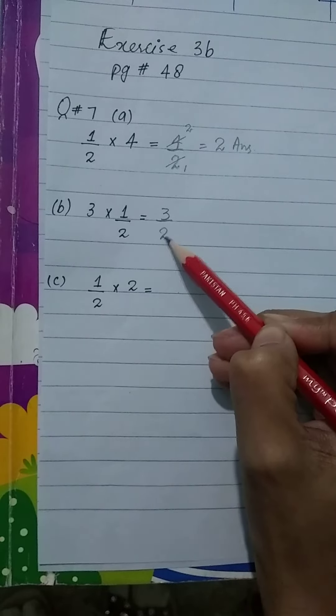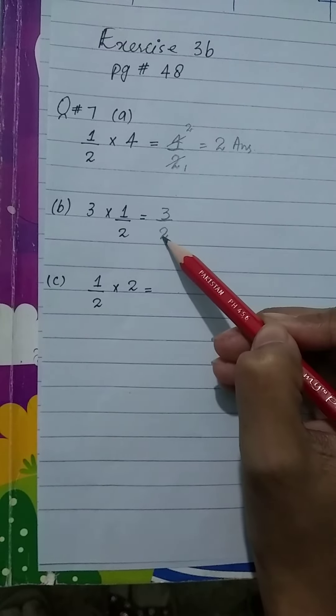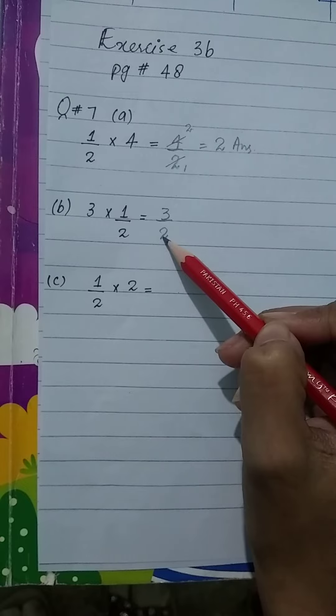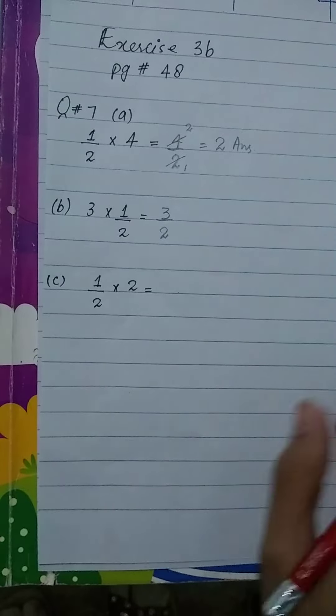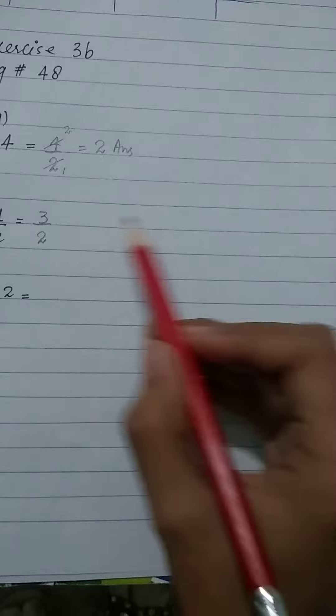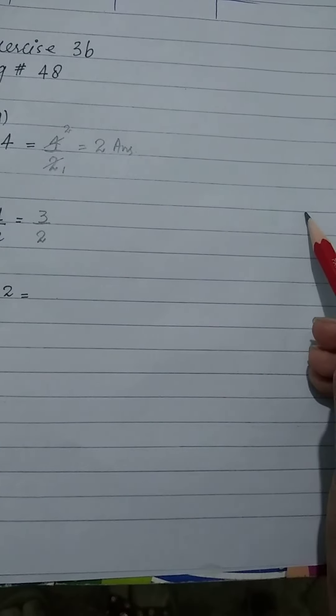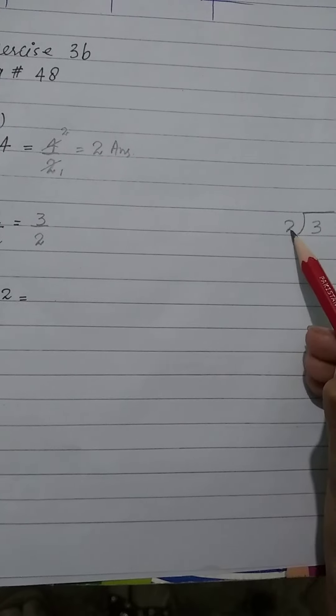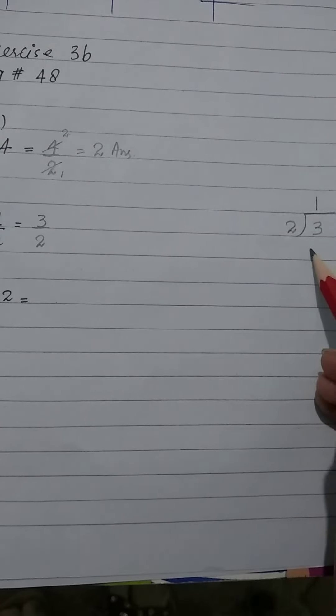Can 3 and 2 be cancelled from the same table? No. That's why we will solve it using the rough column and divide. 3 divided by 2. 2 ones are 2.